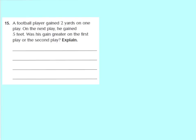Here's our next practice problem. A football player gained 2 yards on one play, and on the next play he gained 5 feet. Was his gain greater on the first play or the second play? I need to know how many feet equals 2 yards. There are 3 feet in 1 yard, so 3 feet times 2 yards equals 6 feet — that was his first play.